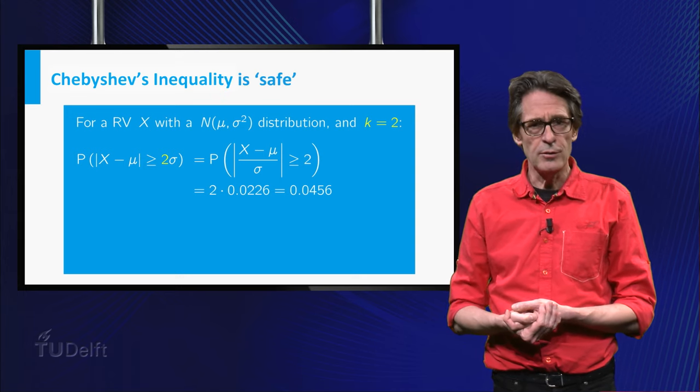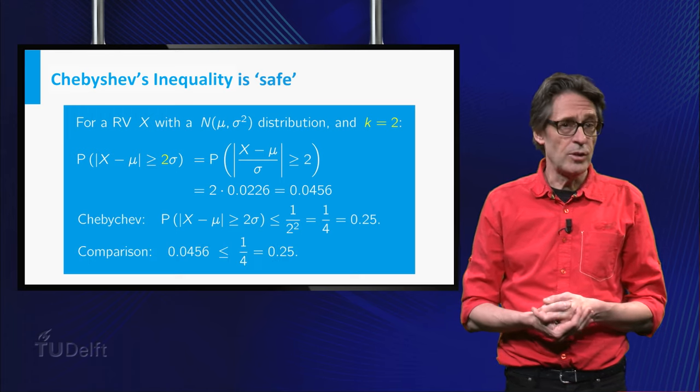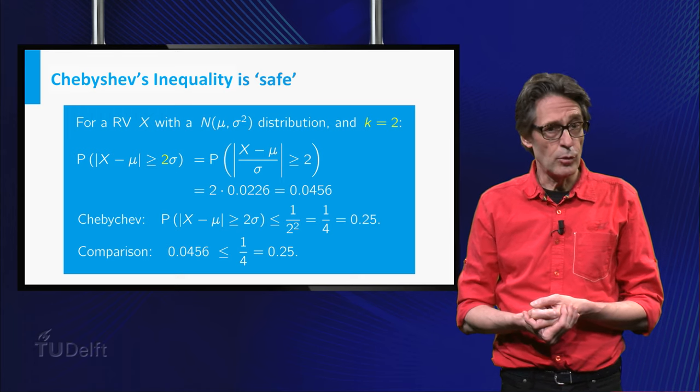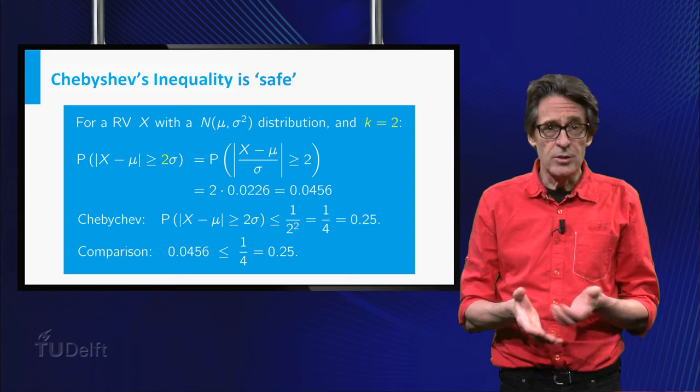Chebyshev's inequality gives that this probability is at most 0.25. Again, no one will deny that 0.0456 is smaller than 0.25. Quite a bit, I would say.